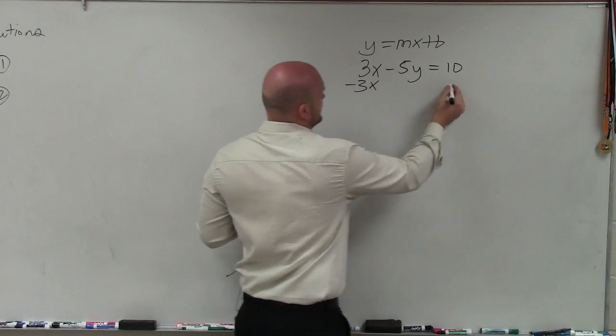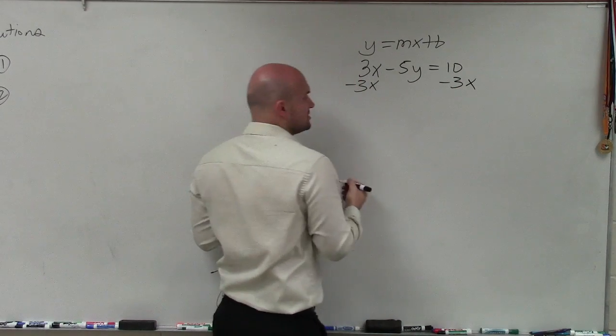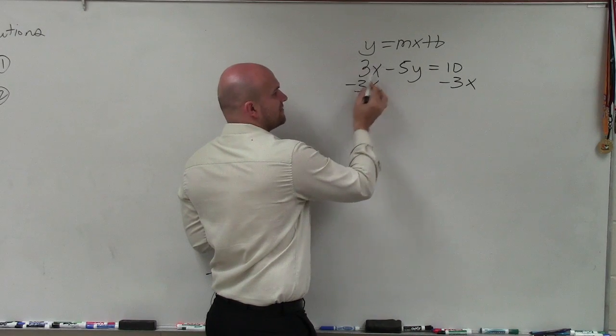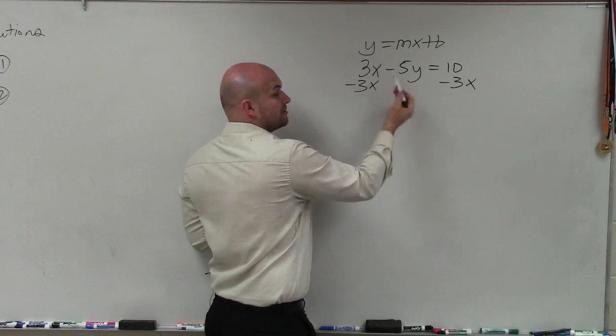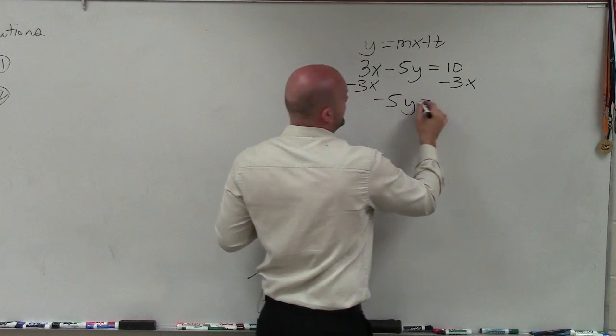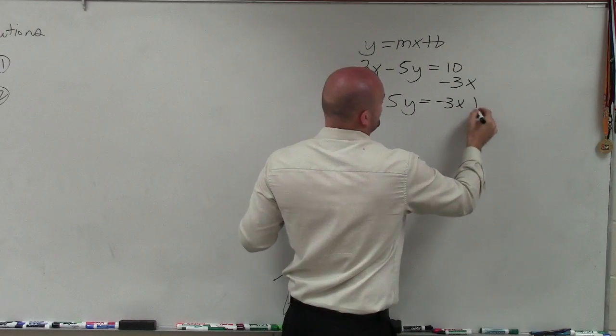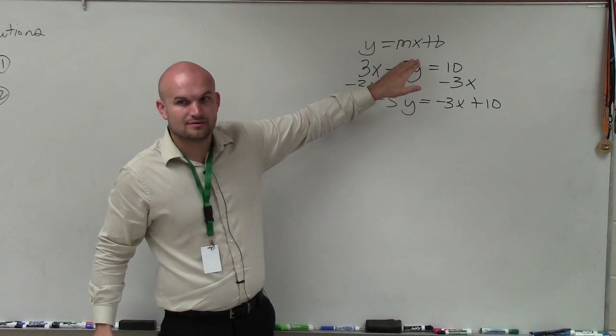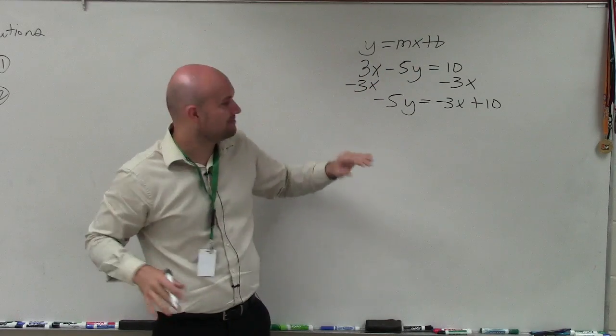So I'll subtract the 3x on both sides. I identify that my y is being multiplied by negative 5 and it's being added by 3x. So I'm going to always undo addition and subtraction first. So I subtract the 3x on both sides. Then I have negative 5y equals negative 3x plus 10. We always want to write the x in the front of there.